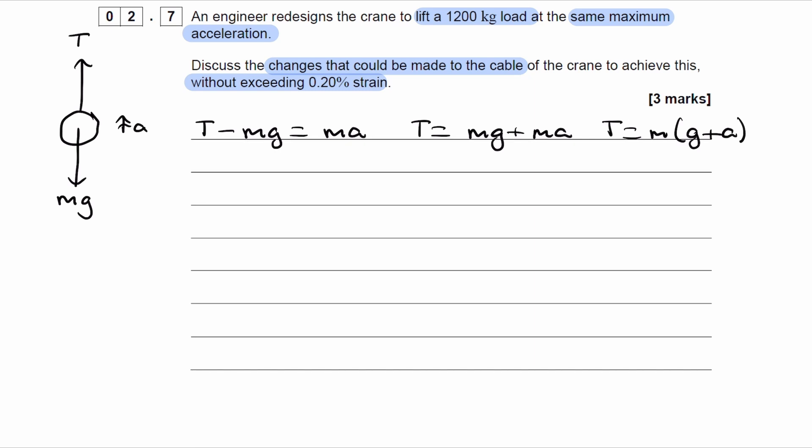So we can see from this equation that we have here that tension is proportional to mass. So if the mass were to double, the tension will double too. So mass doubles, therefore tension doubles as well, as T is proportional to M.